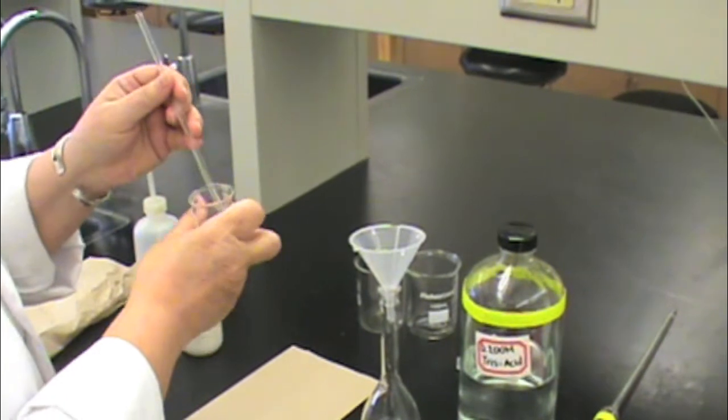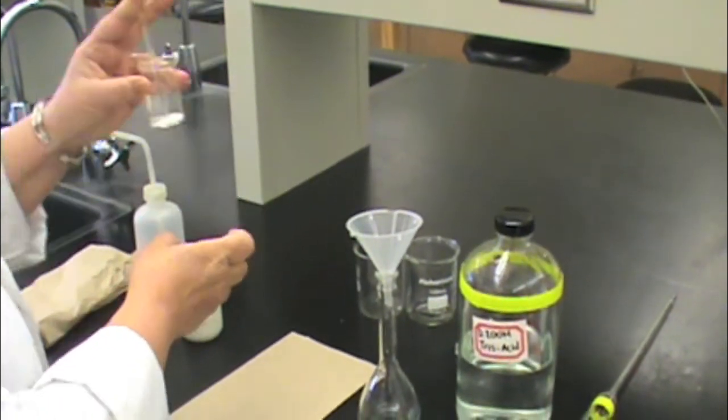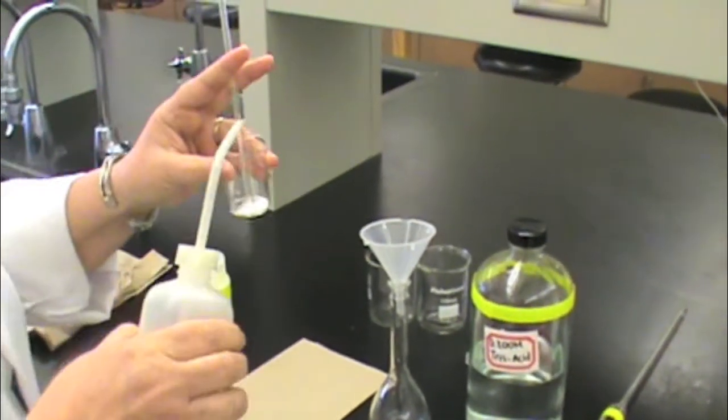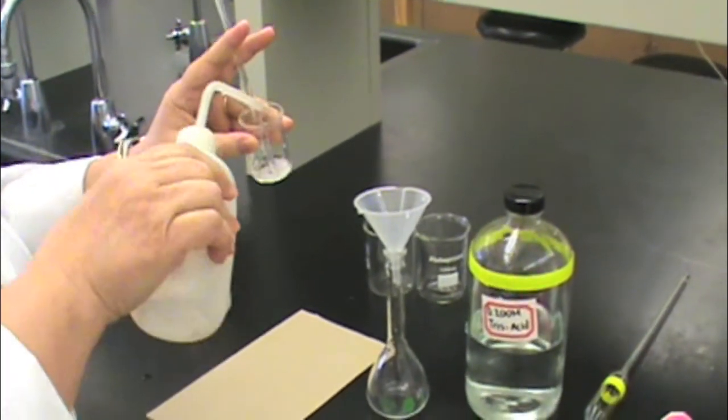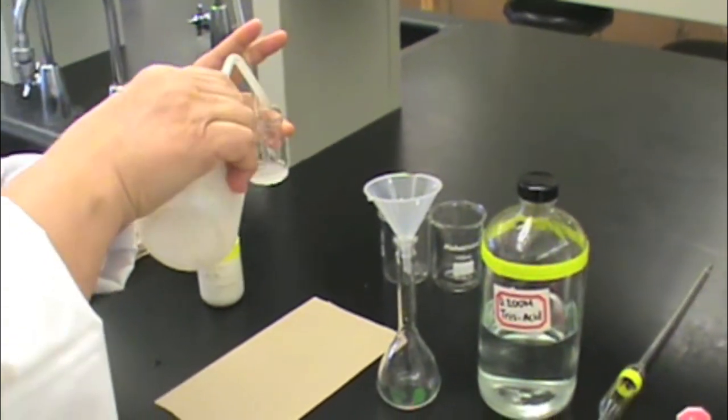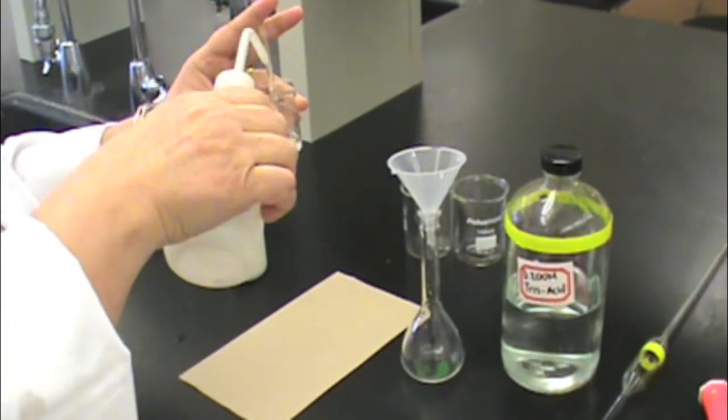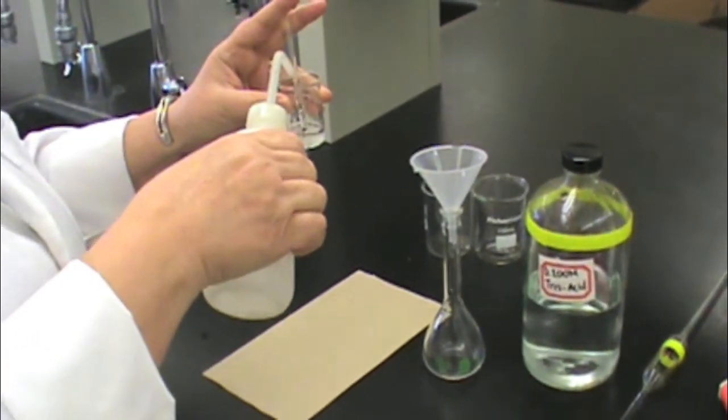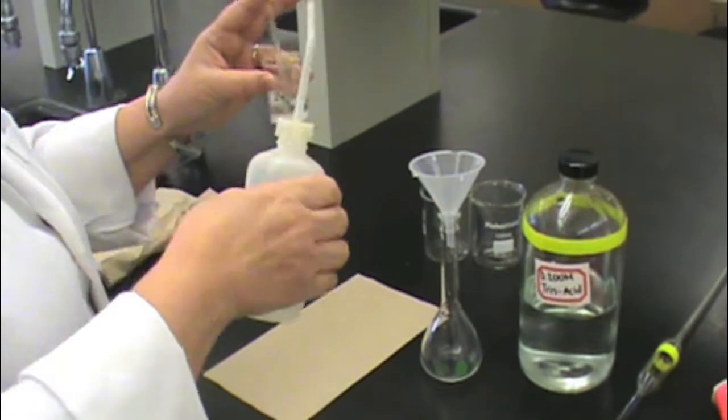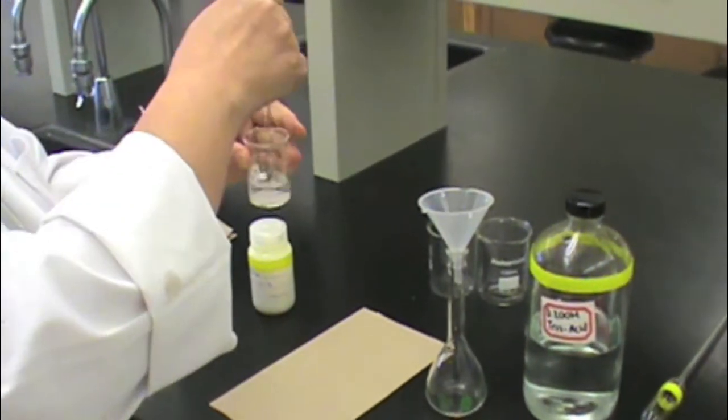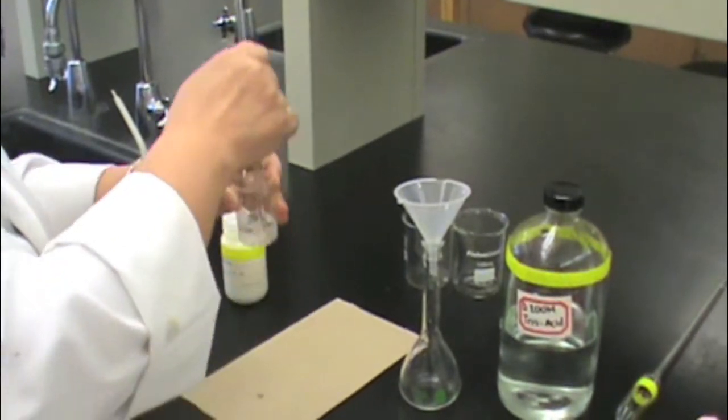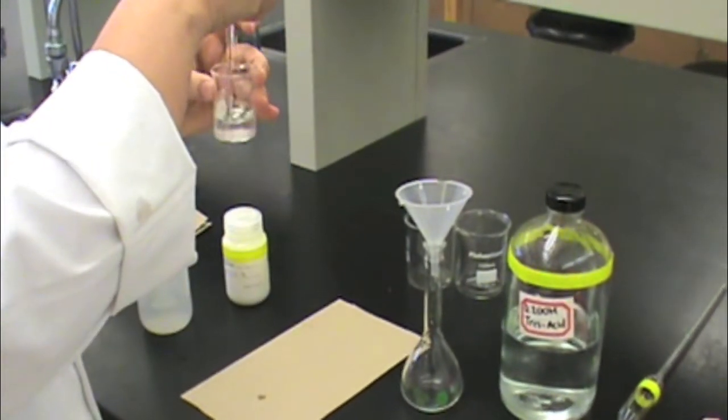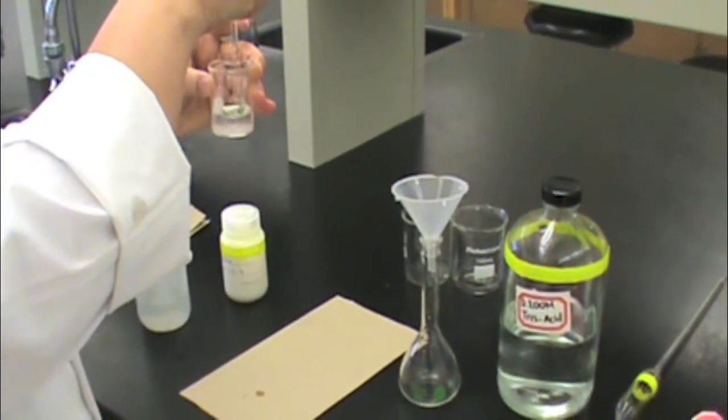Place your stir rod in the beaker containing the solid. Hold it in place and use your wash bottle to rinse some water down the side of the glass stir rod and around the sides of the beaker to help dissolve your solid. Use your glass stir rod to dissolve your solid. Sometimes you may need to add a little bit of extra water to make sure that your solid is completely dissolved.